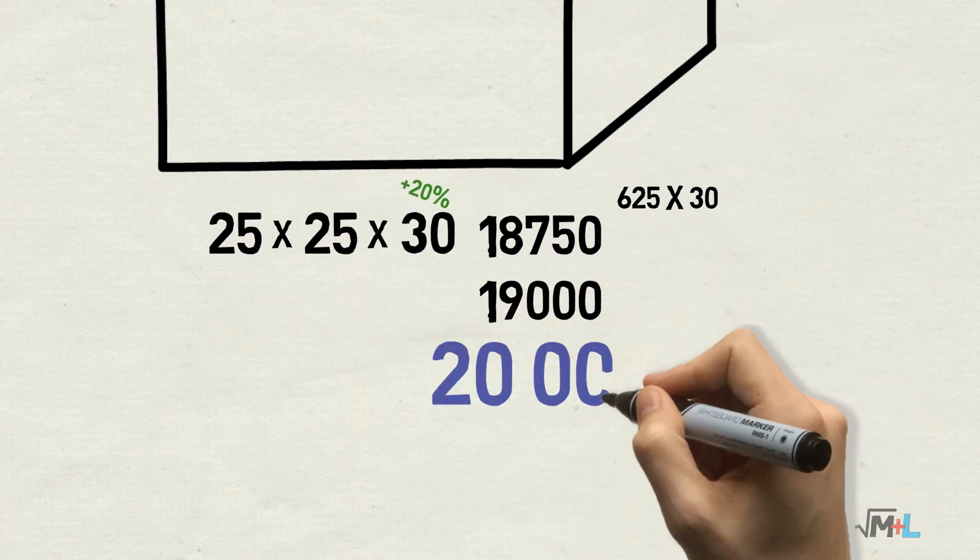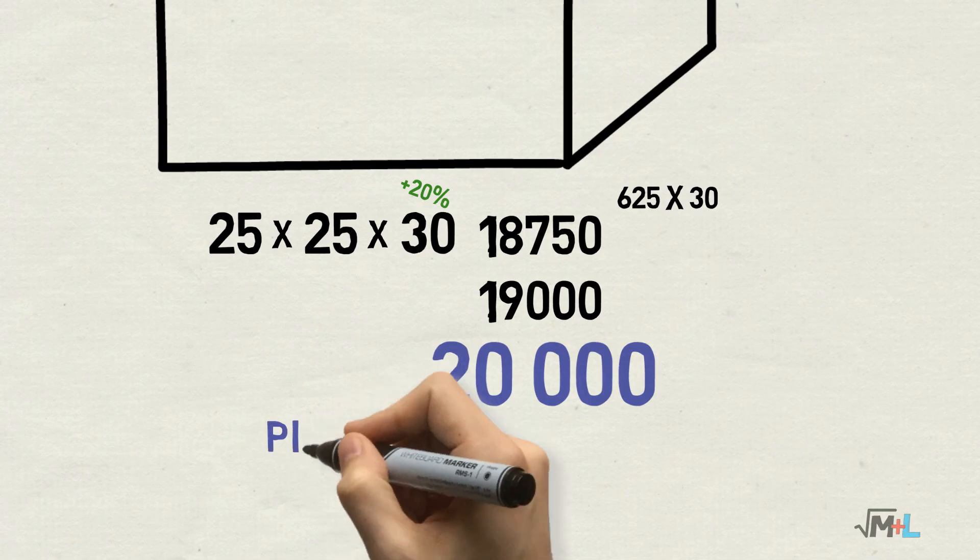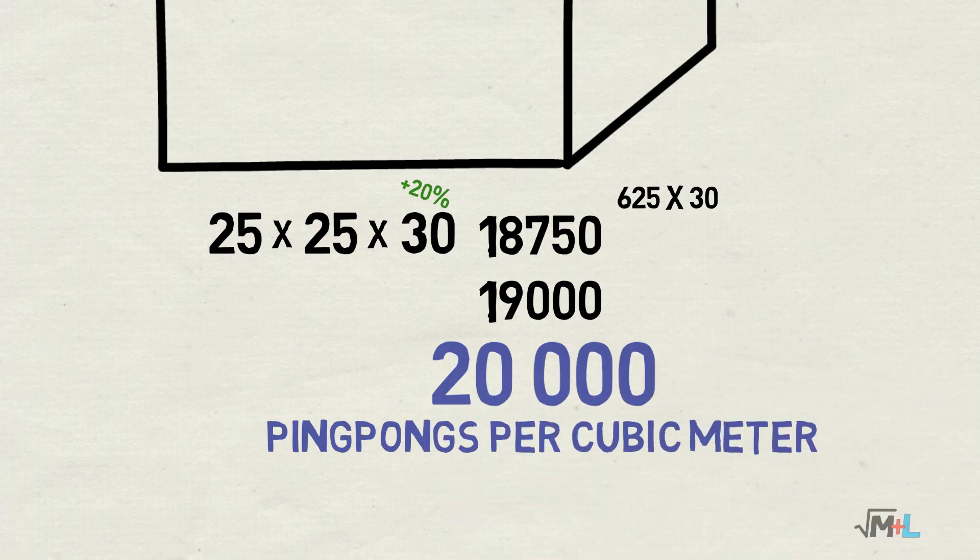Rounded to 19,000 for easier calculation. Or to 20,000 as I did, because I felt I still underestimated a bit that 20% gain. So the first part is done. 20,000 ping pong balls per cubic meter. That is the only number you have to remember from this part.